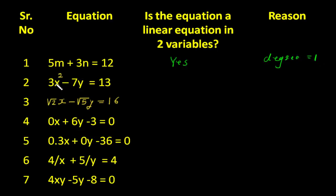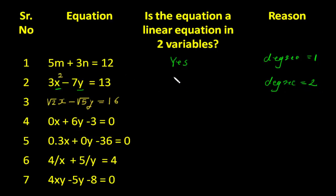Now let's take another example: 3x squared minus 7y is equal to 13. Here, if you see the variable x, the degree of x is 2. So the reason will be: the degree of x is 2, and that's why it is not a linear equation in two variables. So the answer is no.